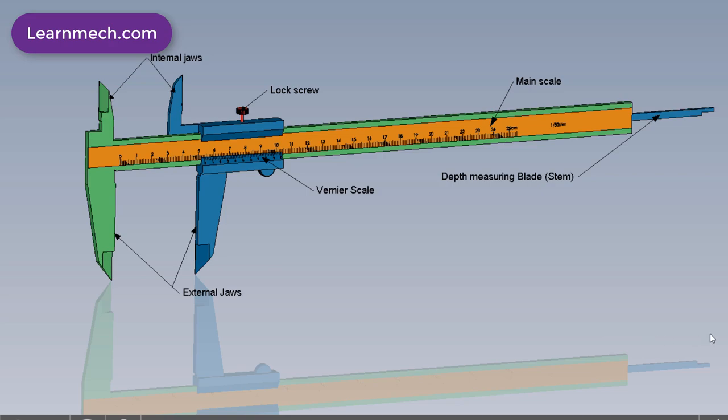Other parts of Vernier Caliper are external jaws. These jaws are used for measuring external dimensions. The job is placed in between these jaws.